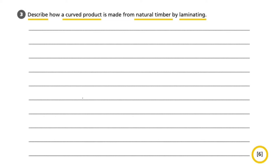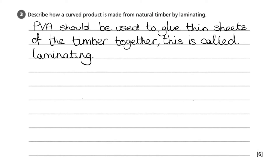So let's think of the processes we would go through to create a curved product. We should remember that we are looking for at least six clear points. I would start by explaining the term laminating and how natural timber in particular can be laminated together. This is a simple process whereby PVA is used to glue thin sheets of timber together — I've confirmed that this process is called laminating, ensuring the examiner is clear that I understand technical and subject-specific terminology.